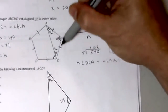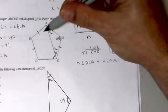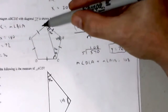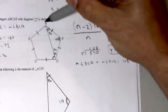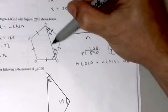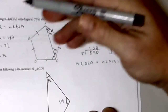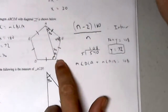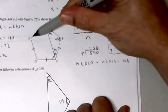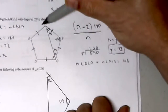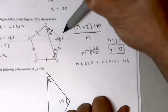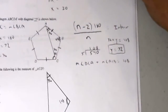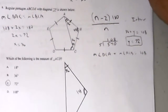Also, angle DCB is 108. You can think of it as 2 out of 3 equal parts of 108, which is 72. Another approach: ACDE forms an isosceles trapezoid where angles at C and D are both 108, so 108 + 108 + 2x = 360 and you can solve that way. The answer is C, 72.